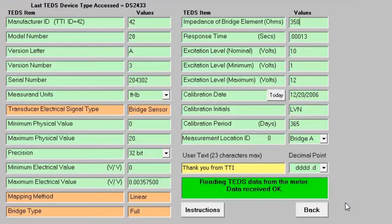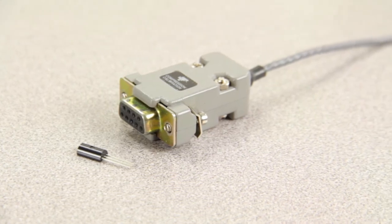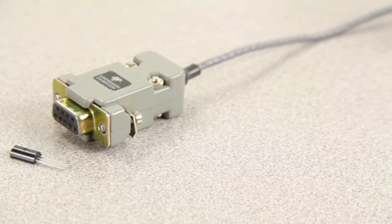All of the sensor's calibration information is stored into a small EEPROM located in the connector, where sometimes the EEPROM can be installed inside the sensor.